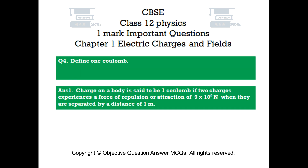Question number 4. Define 1 Coulomb. Answer number 4. The charge on a body is said to be 1 Coulomb if two such charges experience a force of repulsion or attraction of 9 × 10⁹ Newton when they are separated by a distance of 1 meter.